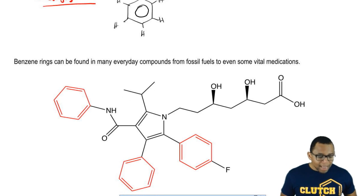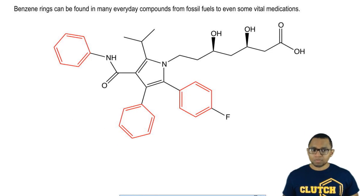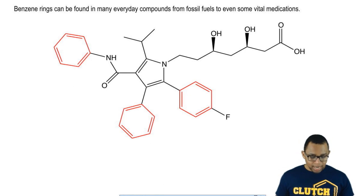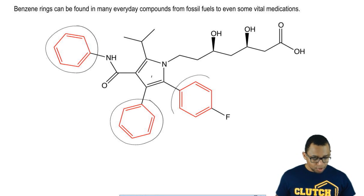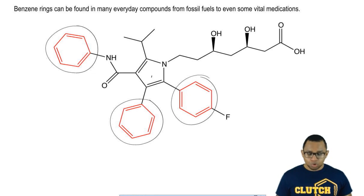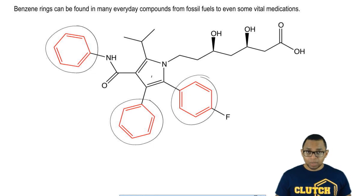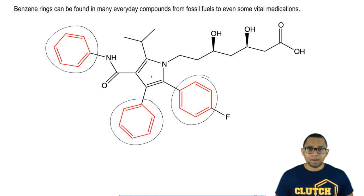Even in some vital medications that people use every day, you can find benzene. For example, this large molecule — with the benzene rings highlighted in red — has one benzene here, another here, and a third here. This is Lipitor, an incredibly important drug used by people with high cholesterol to control cholesterol and fat levels in the body. From fossil fuels to Lipitor at the pharmacy, benzene is involved. It's an incredibly versatile and stable compound, which is why you find it in so many different things.